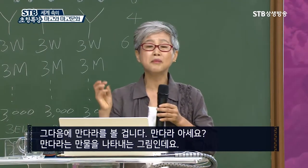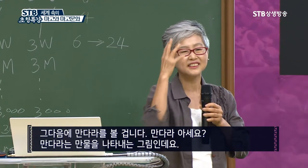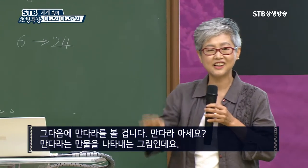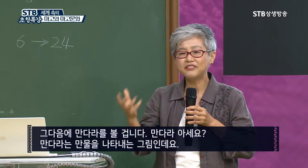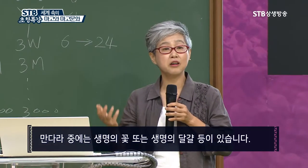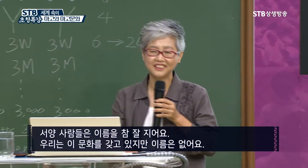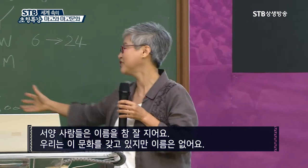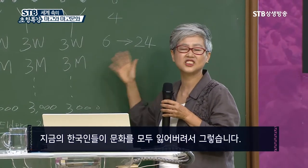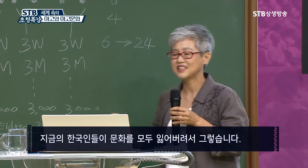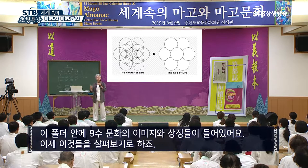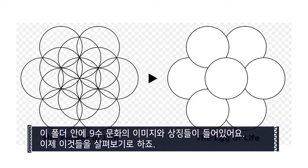And you will see mandalas — a diagram that depicts how things are manifested. And that's the flower of life and egg of life. Western people are somehow very good at naming, whereas we have this one but don't have the name, because we have forgotten this tradition, at least in our time. So here I have images and symbols of nine numerology saved in one folder.